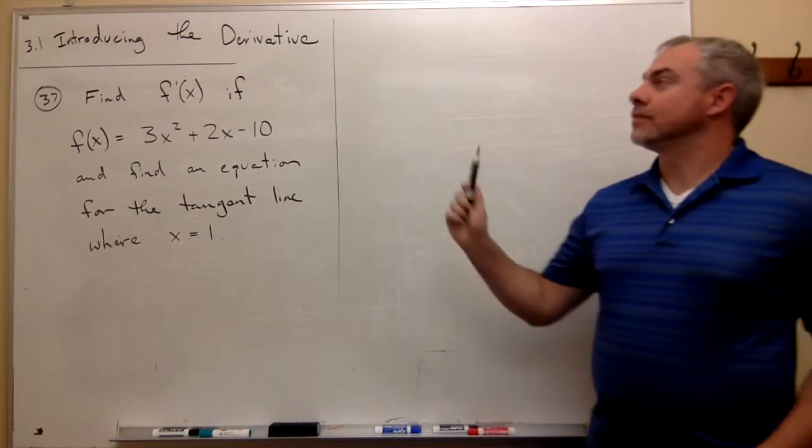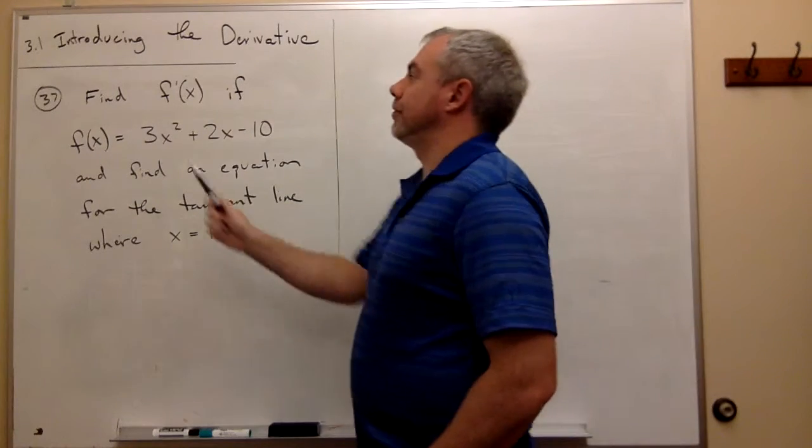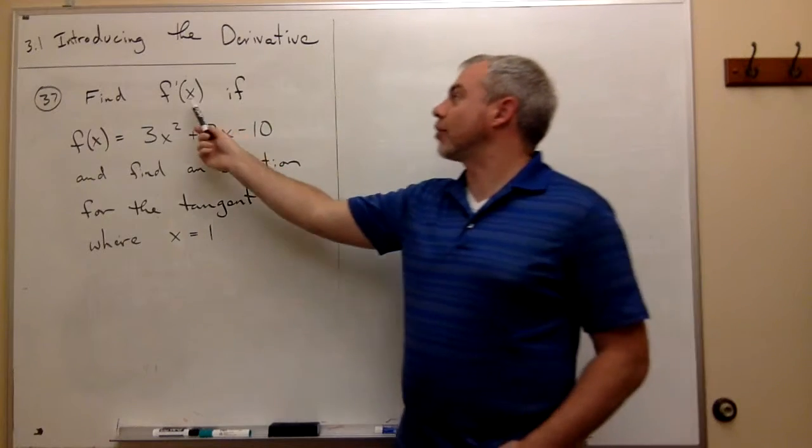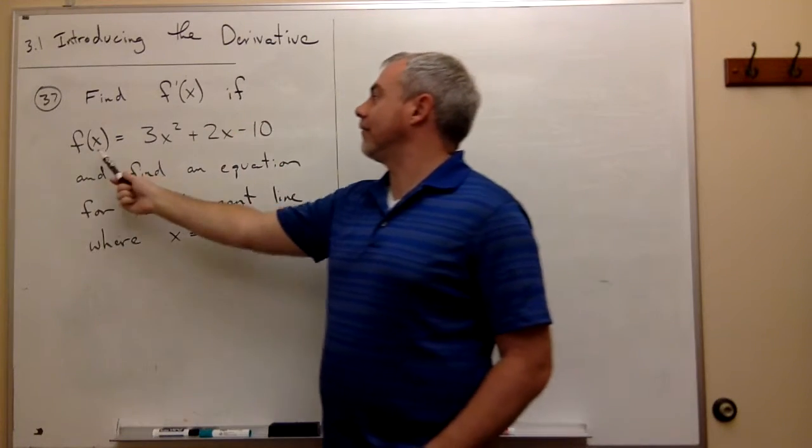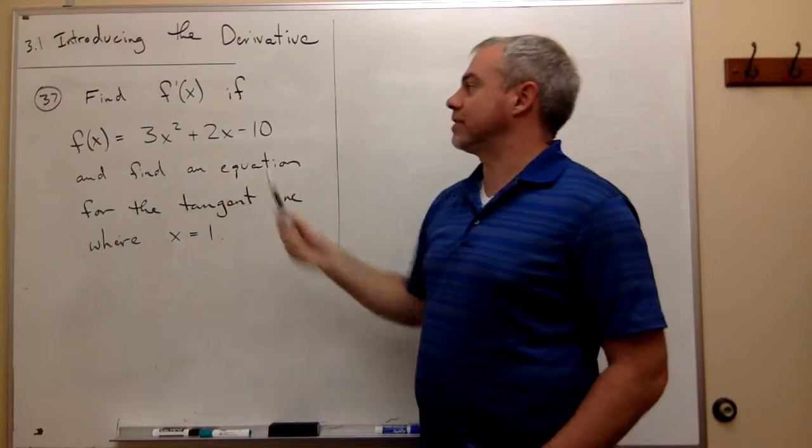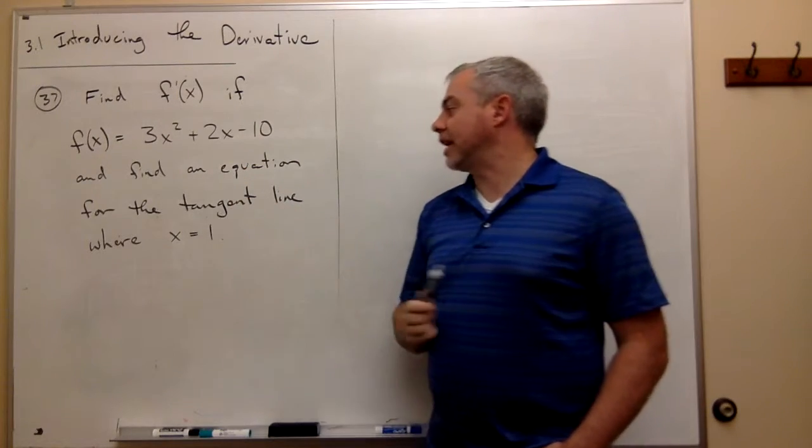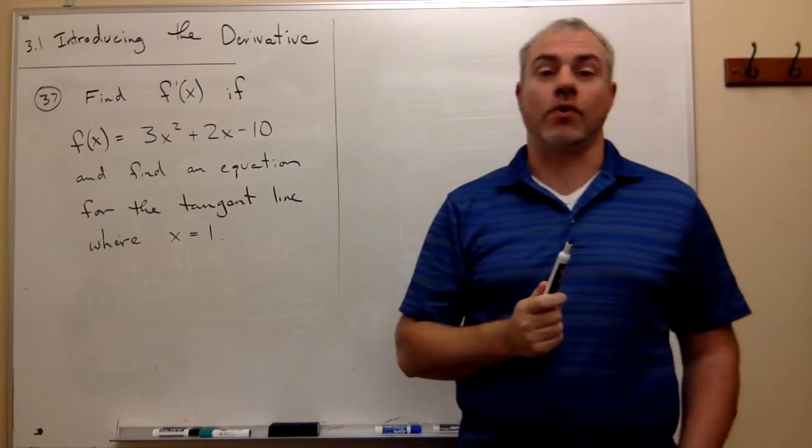Welcome back. Let's look at problem number 37. In problem number 37, we want to find f'(x) if f(x) = 3x² + 2x - 10, and find an equation for the tangent line where x = 1.